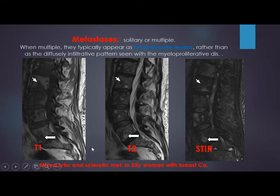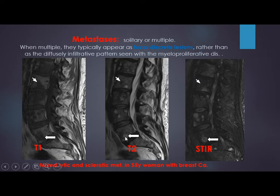This patient is a 55-year-old with metastatic breast cancer, showing both types of metastasis — since breast cancer can cause both lytic and osteoblastic metastasis. On T1, T2, and STIR: low signal on T1 and high signal on T2 represents lytic metastasis, highlighted on STIR. While low on T1, low on T2, and low on STIR represents osteoblastic metastasis — osteoblastic lesions appear low on all sequences.